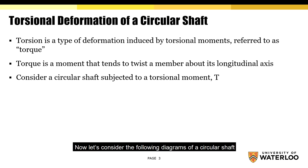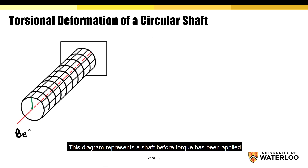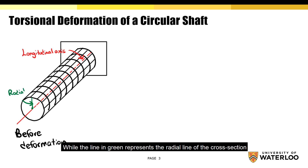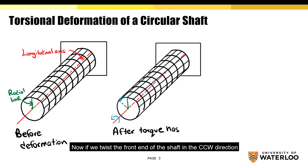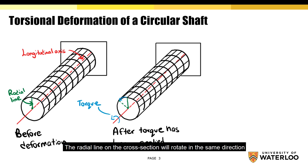Now let's consider the following diagrams of a circular shaft. This diagram represents a shaft before torque has been applied. The line in red represents the longitudinal axis, while the line in green represents the radial line of the cross section. Note that only the back end of the shaft is fixed. If we twist the front end of the shaft in the counterclockwise direction — or in other words apply torque — the radial line on the cross section will rotate in the same direction.